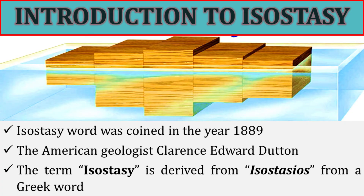Isostasy is a general scientific term coined in 1889 by the American geologist Clarence Dutton. The term isostasy is derived from the Greek word meaning the state of being in balance or equal standing. The isostasy idea is that the lighter crust must be floating on the denser underlying mantle. The theory of isostasy explains the tendency of the earth's crust to reach equilibrium and the distribution of material in the earth's crust according to their gravitational values.